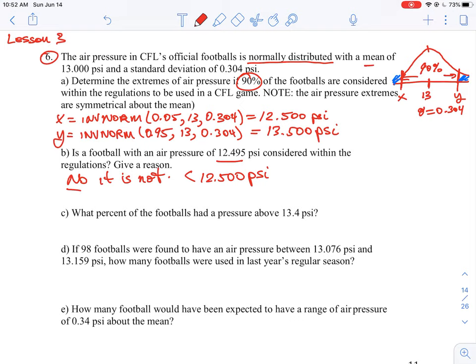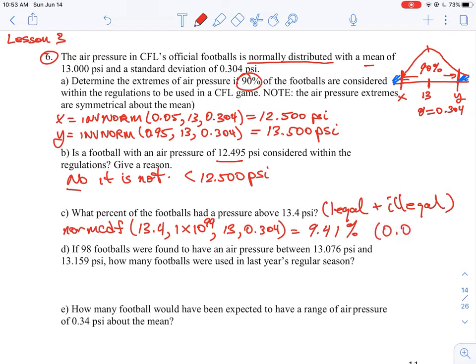What percent of the footballs had a pressure above 13.4 PSI? So this includes the legal footballs, plus the illegal ones, which there won't be many, but there's a 5% chance that there's some that are above that range. So we could use our normal CDF function, our norm CDF, where we are going to list 13.4 is our lower range. We are going to go to the infinity range, 10 to the 99, that means everything above that curve. And then 13, and then 0.304, we'll put in our values here, and we will see that this is 9.41%. Your calculator should probably read this as 0.0941, and there's probably a few more decimals there. So that would tell us how many percentages of the football are above 13.4.